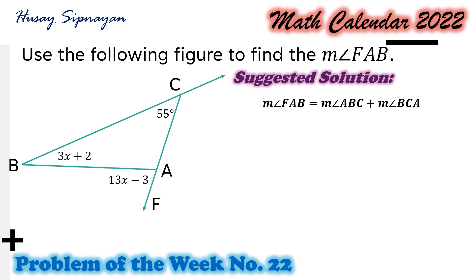Substituting the values, we have the measure of angle FAB is equal to 13x minus 3, the measure of angle ABC is equal to 3x plus 2, and the measure of angle BCA is equal to 55 degrees.